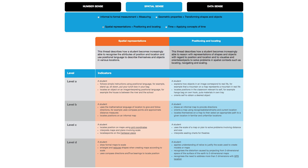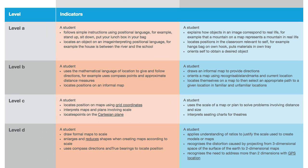Each thread includes descriptions of what a student says, does or produces at increasing levels of numeracy sophistication. Each description is called an indicator. The indicators are grouped together to form a level. There are as many levels within each thread as can be supported by evidence. Each level has one or more indicators and is more sophisticated than the preceding level. The indicators within a level are non-hierarchical.